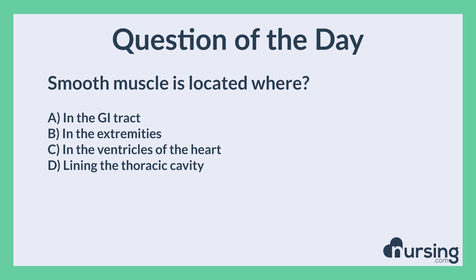Smooth muscle is located where? A. In the GI tract. B. In the extremities. C. In the ventricles of the heart. D. Lining the thoracic cavity.